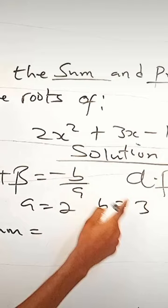The product of the roots, which is c over a, and c is minus 1. Our a, in this case, is 2.